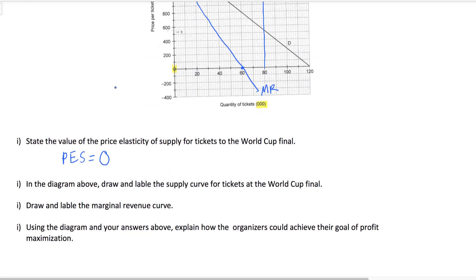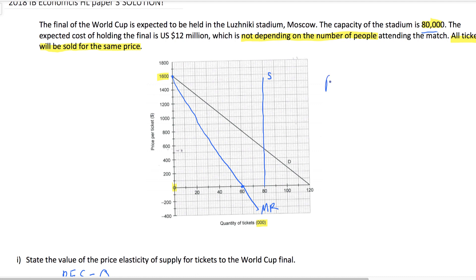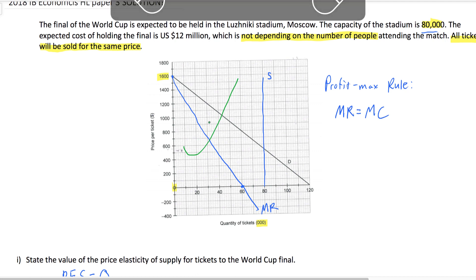Let's look at the final prompt: using the diagram and your answers above, explain how the organizers could achieve their goal of profit maximization. To answer this, we have to review the profit maximization rule. You should remember this — it's true for every kind of firm, whether perfectly competitive, monopolistic, or monopolistically competitive. A firm should always produce up to the point where marginal revenue equals marginal cost. But wait — I don't have a marginal cost curve here. Do I just draw one somewhere on the graph? No, of course not. That would be irresponsible.